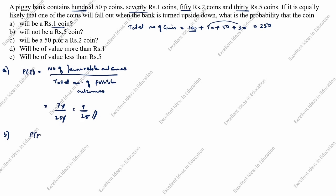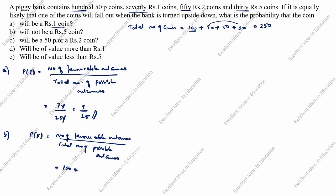Part B: will not be a rupee 5 coin. P(E) equals number of favorable outcomes divided by total number of possible outcomes. Since it will NOT be a rupee 5 coin, we add the 50 paise coins (100), rupee 1 coins (70), and rupee 2 coins (50) — we do not add rupee 5 coins.